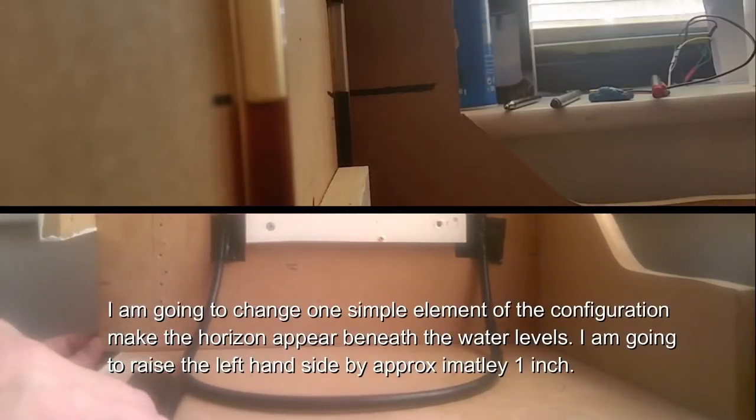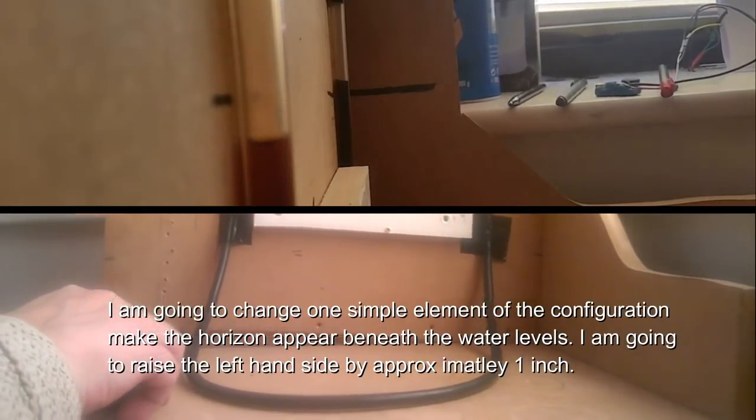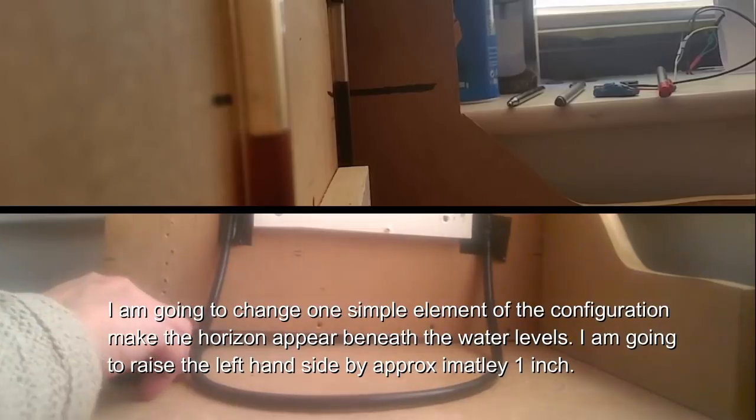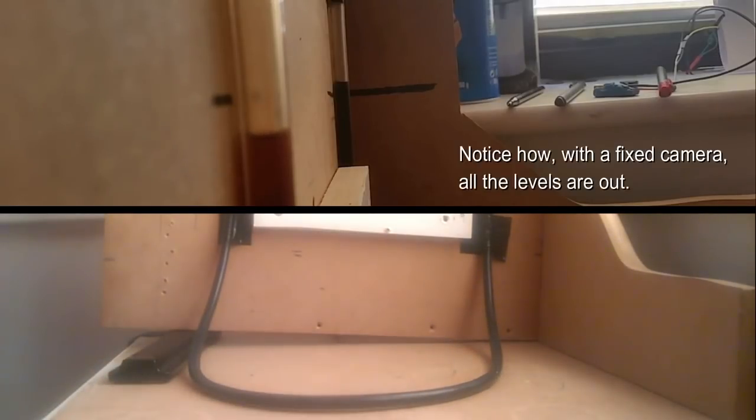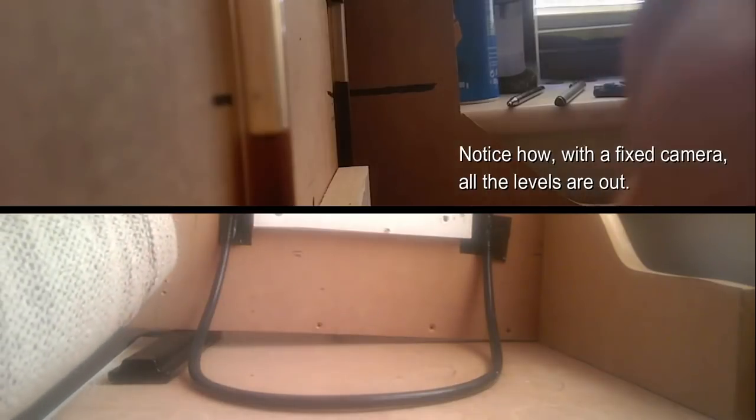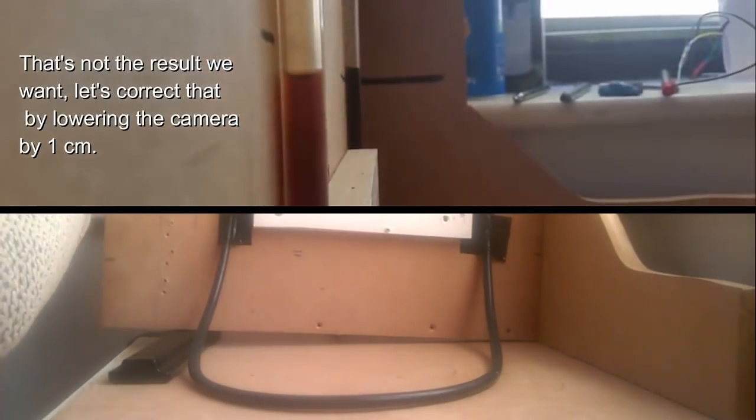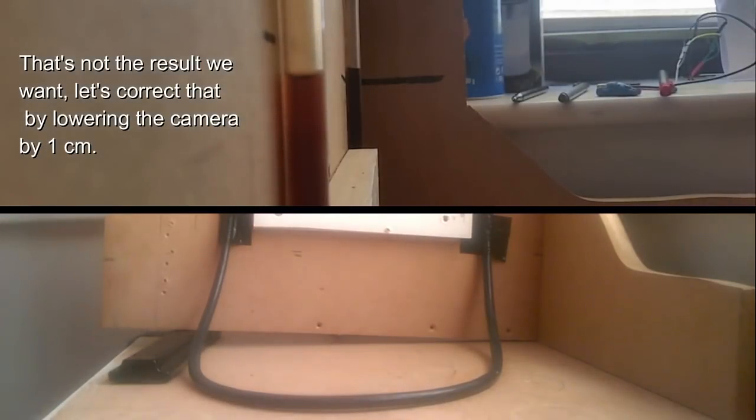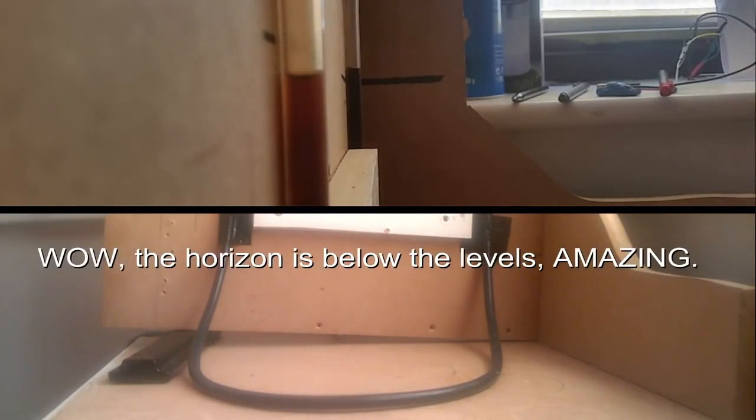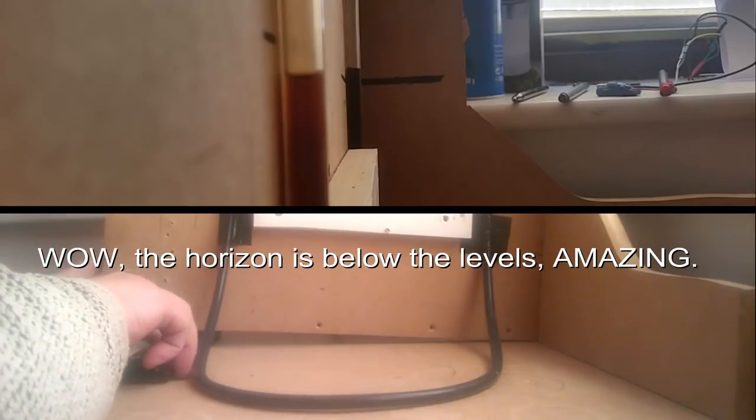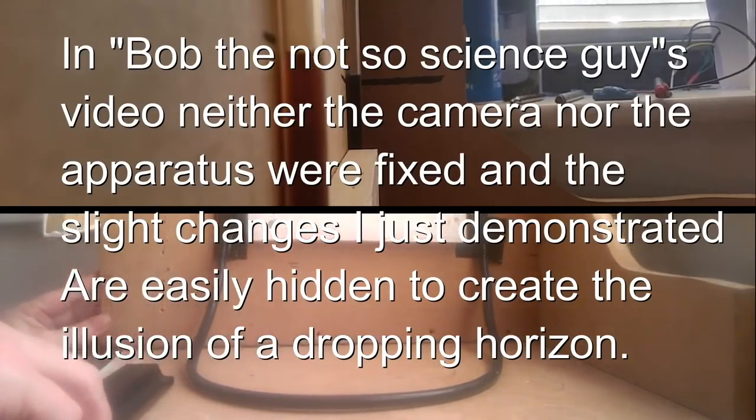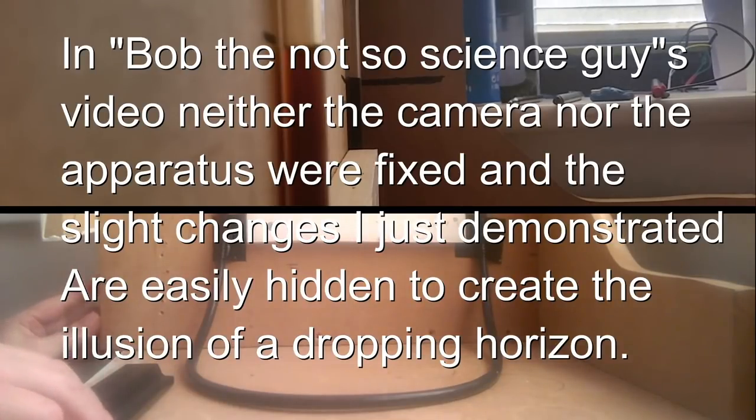So now he's demonstrating that his water level is leveled to the horizon back there, and he's lifting up one corner. Now notice this time when he moves the water level, you see how the levels are bouncing up and down and freely movable? Compare that to his last one where they were pretty fixed. Now he's dropping the camera down and showing the water level looks like it's over the horizon. And he talks a little smack about me and then we're going to go out to the outside world and do this again. But let's show you how he did that.